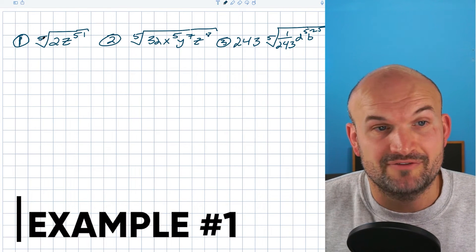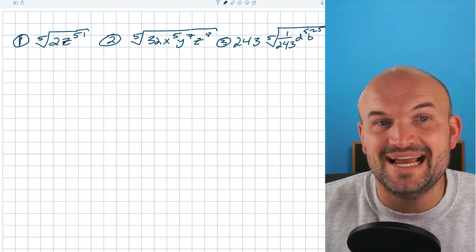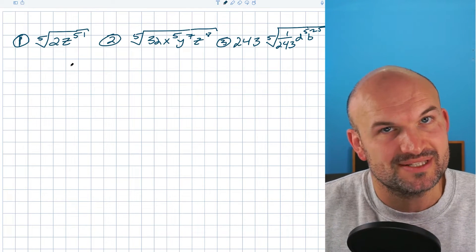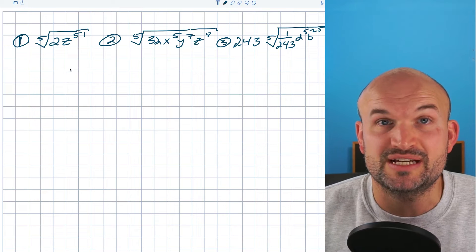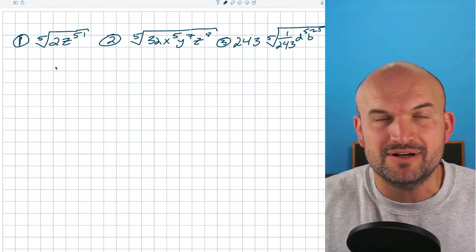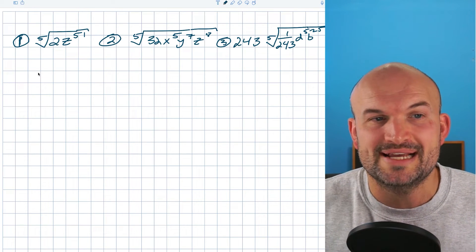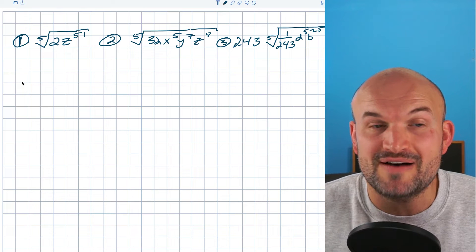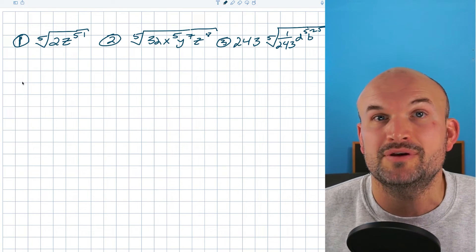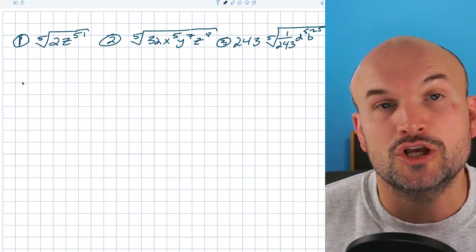So in this first example, I have the fifth root of 2, which I know cannot be raised to the fifth power, and then I have z to the 51st power. So this one's kind of interesting because what we want to be able to do is rewrite that being to the fifth power. So how can I rewrite z to the 51st raised to the fifth power? What I'm going to want to follow is my power rule. Remember, whenever you have an exponent raised to another exponent, you multiply the powers.